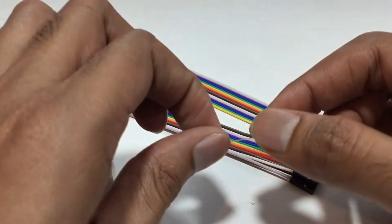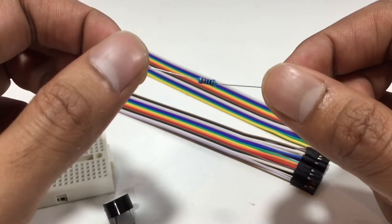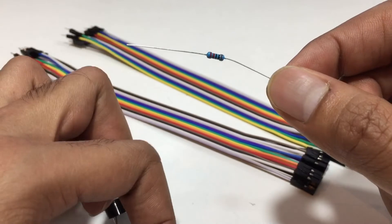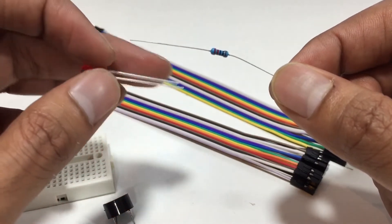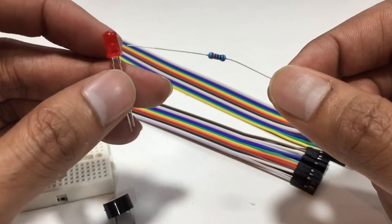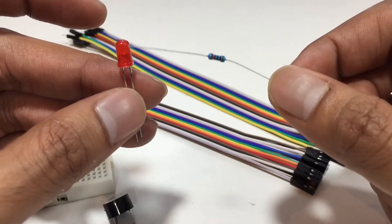To limit the current, we need a resistor. This is 220 ohm resistor. It will save the LED because if the current is high the LED might be damaged.